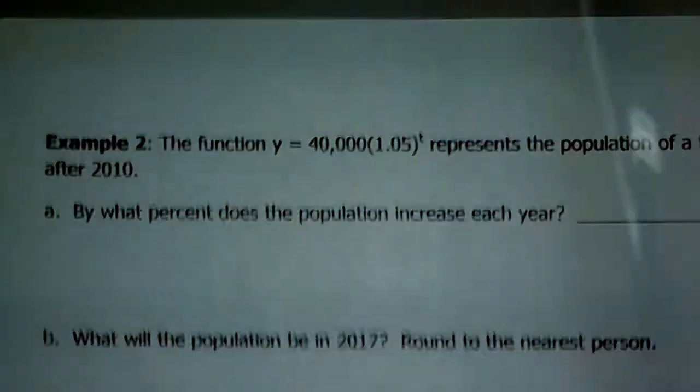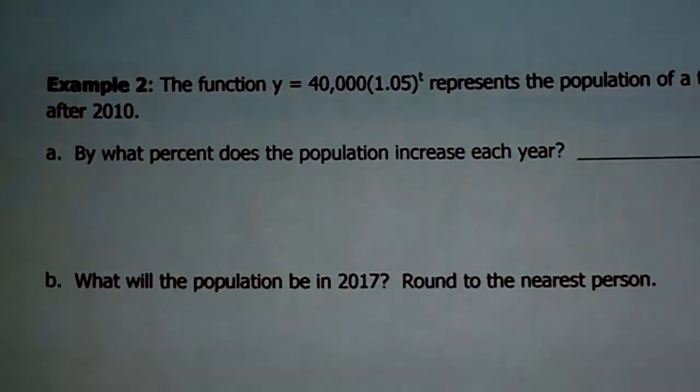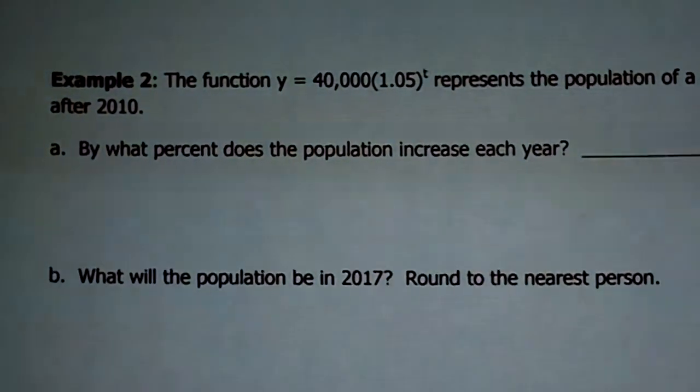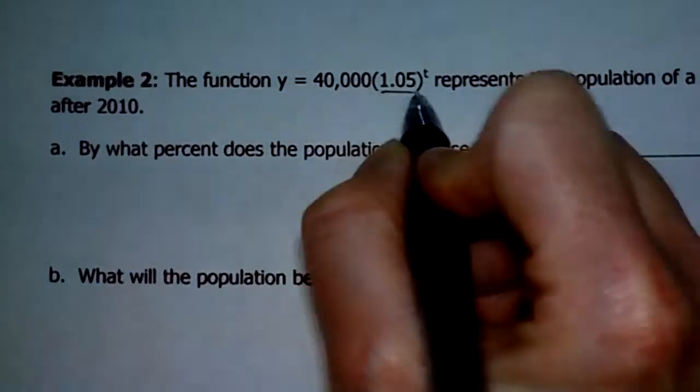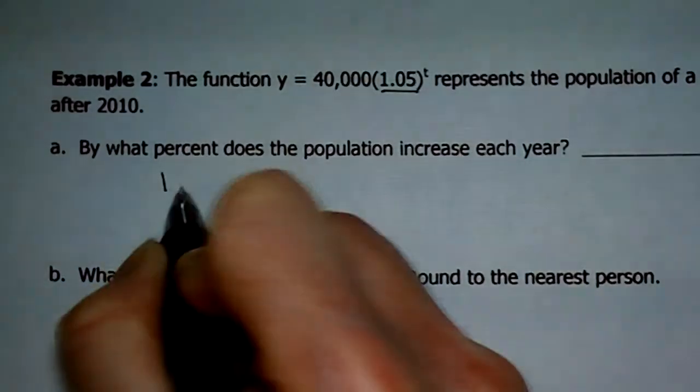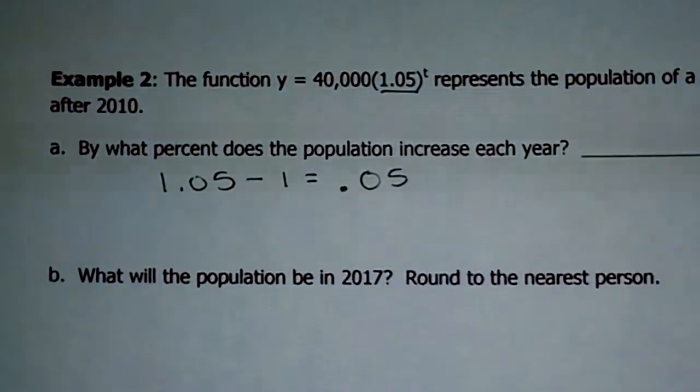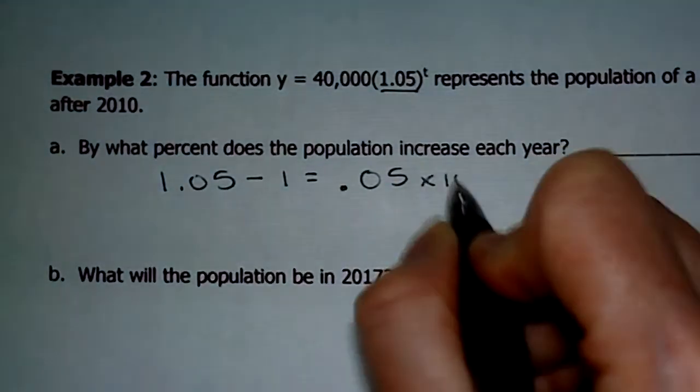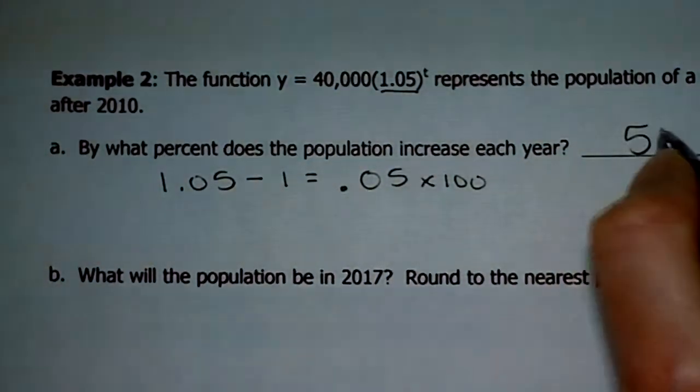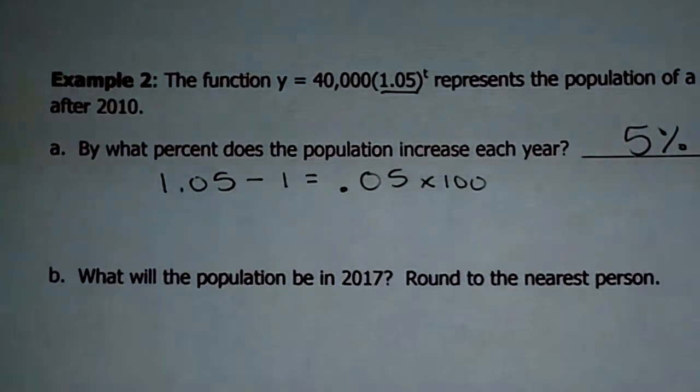So when you did this originally, hang on, I'm going to get this up on the screen for you. You took 150,000 times 1.1 to the 4th power and it came out exact, right? Let's say it would have gotten like .1 or something. You're going to round to the nearest person. So make sure your answers make sense. All right, turn the page. Let's try a few more of these. We've got 3 examples total. And by that time, I think we should be pretty good. Okay. So the function y = 40,000(1.05)^t represents the population of a town t years after 2010. So we're back to 2010 again. By what percent does the population increase each year? So this is the one. I'm looking for the percent. This is where I need this 1.05 to help me out.